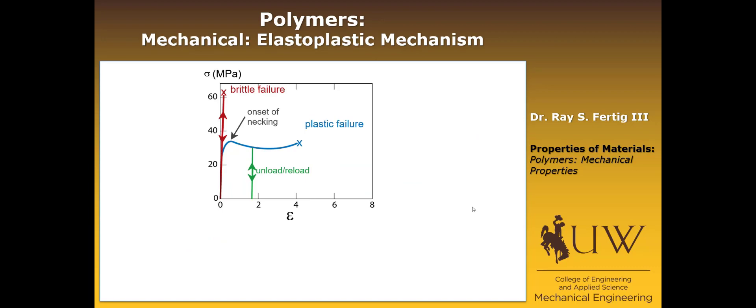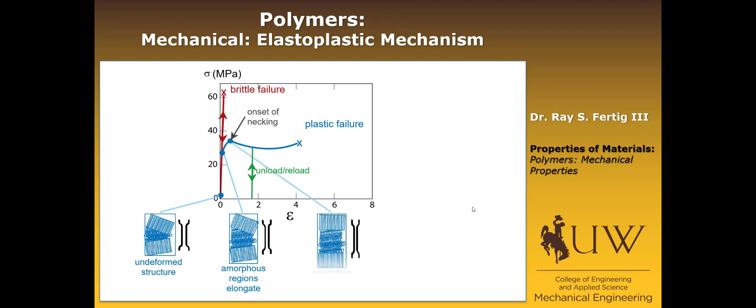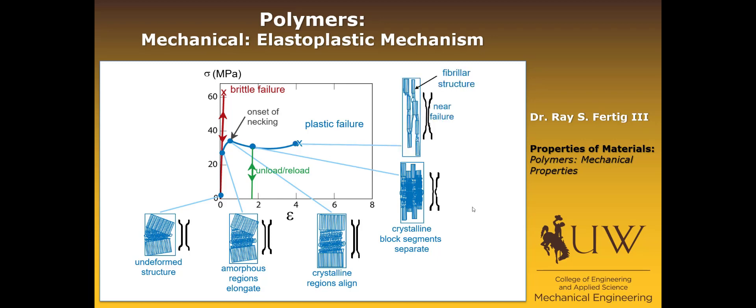Now let's talk a little bit about the elastoplastic mechanism, and we're going to specifically focus on semicrystalline polymers here. So we begin with some undeformed structure that has some amount of crystalline polymer and some amount of amorphous polymer in it. During the first stage of loading, the amorphous regions are going to elongate. The next stage is that the crystalline regions are going to align, and then the blocks of the crystalline regions are going to separate, and then those are going to also grow into like a fibrillator structure. So that's the features on what drives this elastoplastic deformation in polymers.